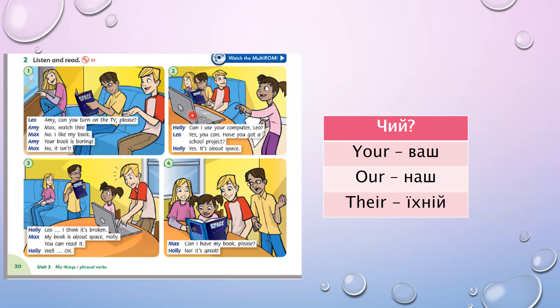Let's turn the page back. You have the dialogue and the video you watched — ми вже працювали з цим діалогом. The task will be to find — знайти присвійні займенники в тексті. For example: your — ваш, our — наш, their — їхній, my, your. Let's read and find and underline these words.